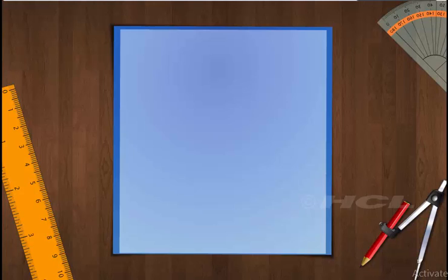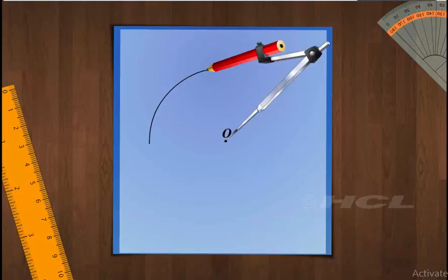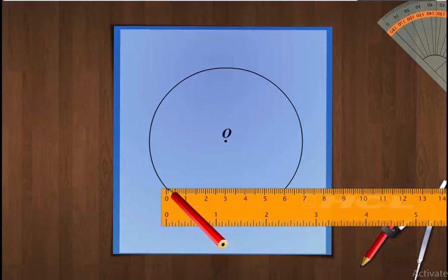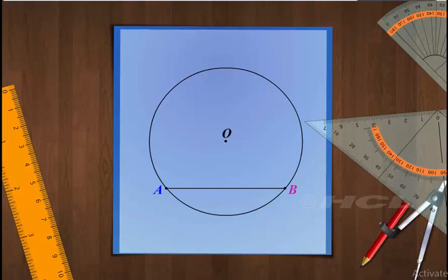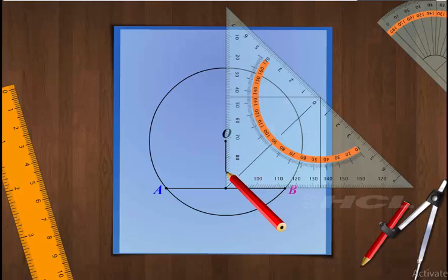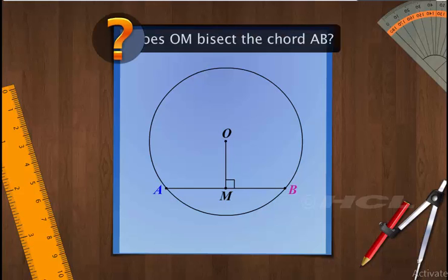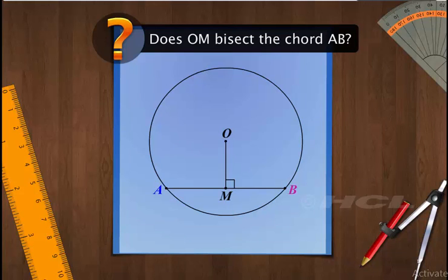Now, let's perform an experiment to find an interesting result related to a chord. Draw a circle with O as its center, then draw chord AB and draw a perpendicular from O to chord AB. The point of intersection of the perpendicular OM and the chord AB is M. Does OM bisect the chord AB? Let's check.